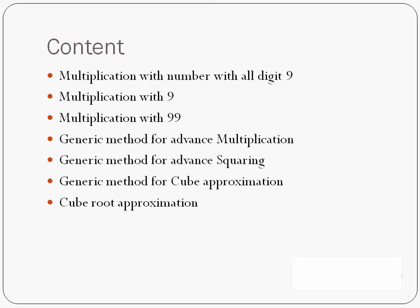For multiplying anything with 9 and numbers related to 9, you don't have to actually multiply. You can get the output without multiplying. In today's lecture we will cover three parts: multiplication of a number with all-digit 9s (like 999, 99, n-times 9), then multiplication with only 9, and then multiplication with 99. With the third method you will be able to multiply any number with 99, triple 9, or any number of 9s — with any digit count. So let us start.